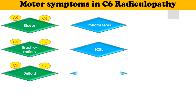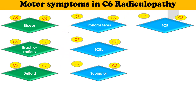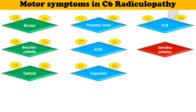extensor carpi radialis longus, supinator, and flexor carpi radialis are supplied by the C6 root in addition to the C7 root. The muscle serratus anterior is supplied by C5, C6, and C7 roots.